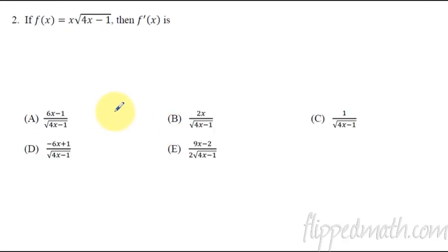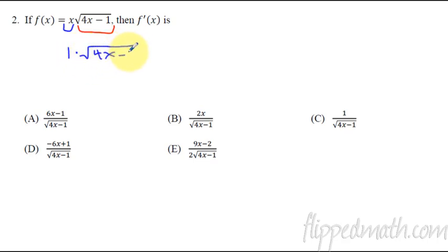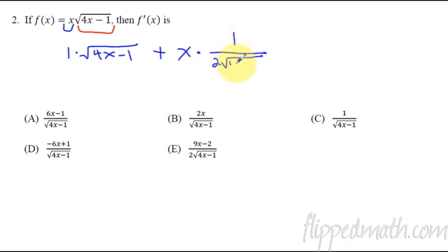Number 2 deals with the product rule. You've got the first piece and the second piece. The derivative of the first is 1, times the second left alone — so it's just 4x minus 1. Product rule uses addition, so plus the first left alone, multiplied by the derivative of the second, which is 1 over 2 times the square root of 4x minus 1, times the derivative of the inside, which is 4.